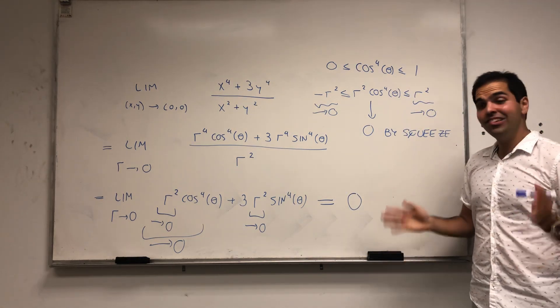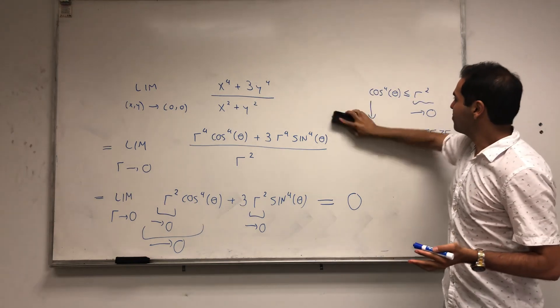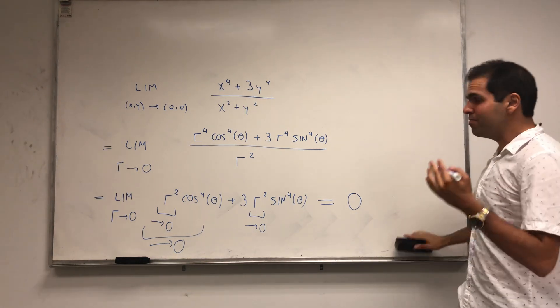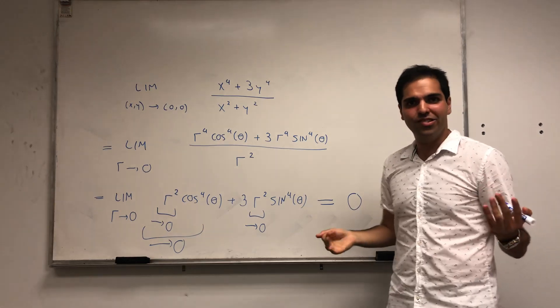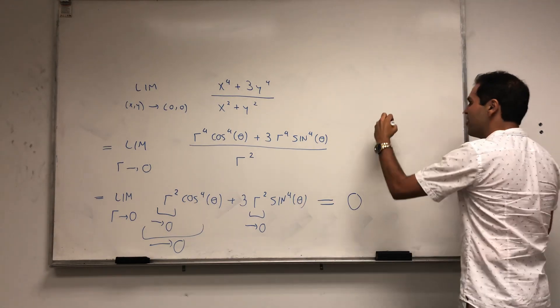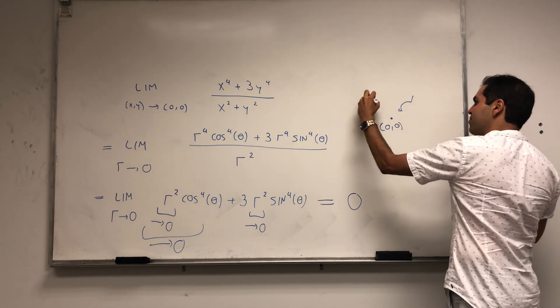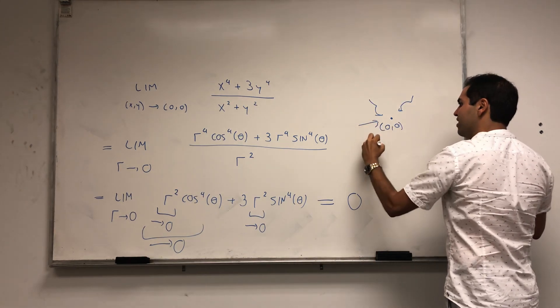And I want to tell you, this is actually very rigorous. Because remember, what makes limits in two dimensions so hard is that you have to show that no matter how you approach the point (0,0), you get the same limit. Right? Something like that.